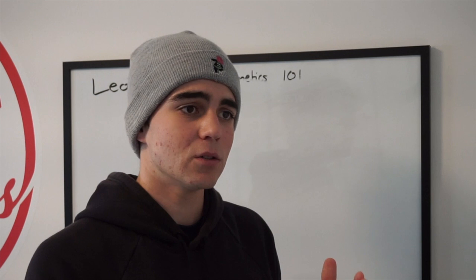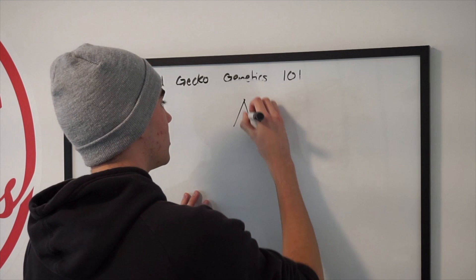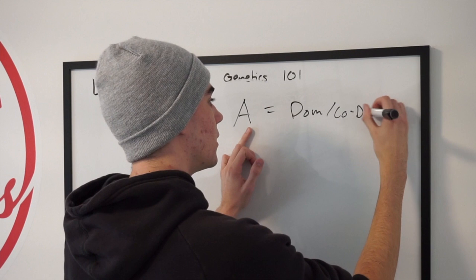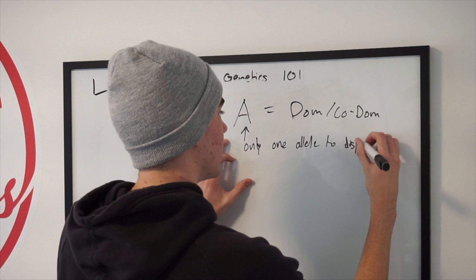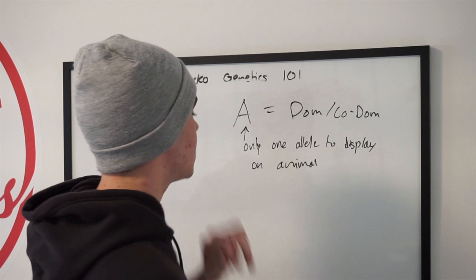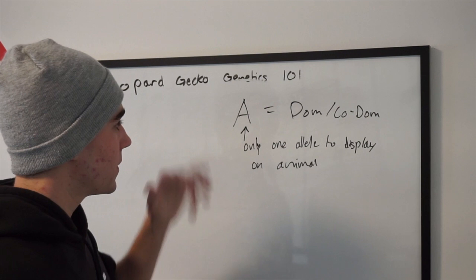That's how recessive genes work. I'll do another video talking about multi-recessive animals — things like raptors, which are eclipse and tremper albino, or white knights, which are bell albino, eclipse, and blizzard. Now, quickly going over dominance and co-dominance: a dominant gene — if something has a capital letter, it is dominant or co-dom, meaning it will show. It only needs one allele to display on the animal.